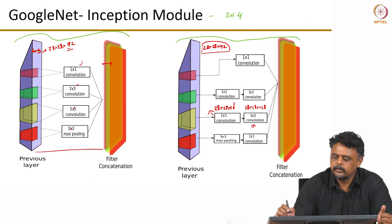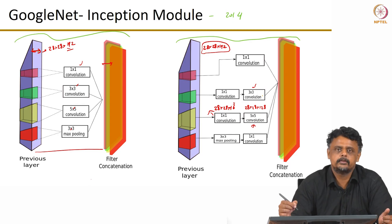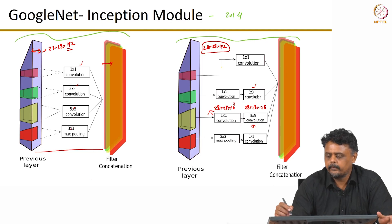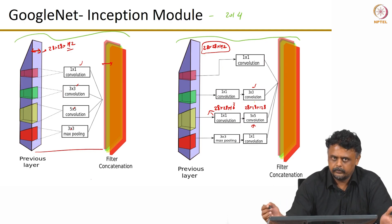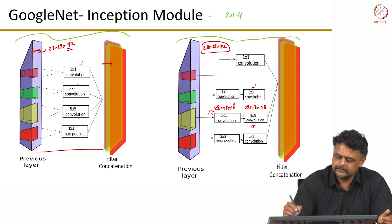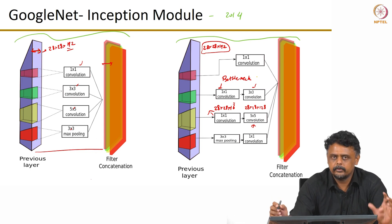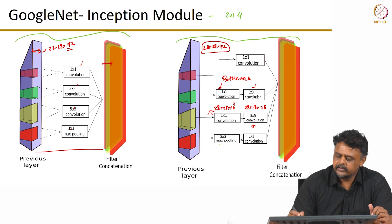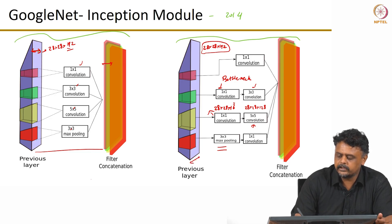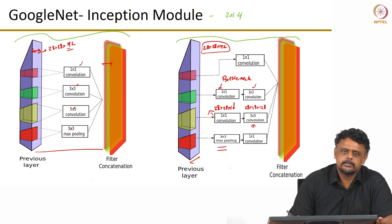This 1x1 convolution prior to doing the larger convolution — with larger filter sizes — projects the input volume to a smaller dimension, and then subsequently you use 3x3 convolution to bring it back. This is what is referred to now as bottleneck layers. You reduce the size of the feature maps that way. Similarly for max pooling, which in most cases preserves the depth of the feature maps, you can use 1x1 convolution after max pooling to reduce the depth.